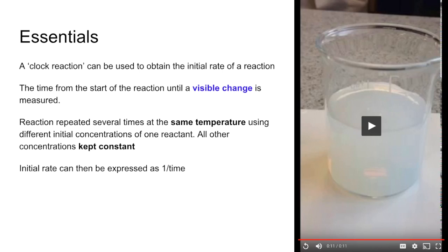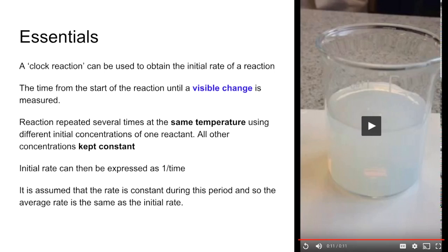The initial rate can be expressed as one over the time and we're assuming that the rate is constant during that time period and so the average rate is going to be the same as the initial rate. It's worth pointing out that the longer the time period for the visible change, the less accurate the initial rate is going to be because the rate does actually vary during the reaction.